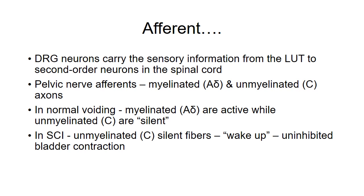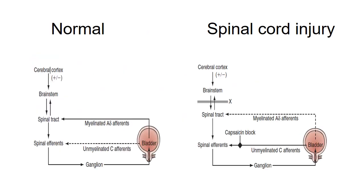In spinal cord injury, the silent C fibers become active, and this causes uninhibited bladder contractions. This picture shows the myelinated A-delta fibers active in normal patients, whereas the unmyelinated C fibers are active in patients with spinal cord injury.